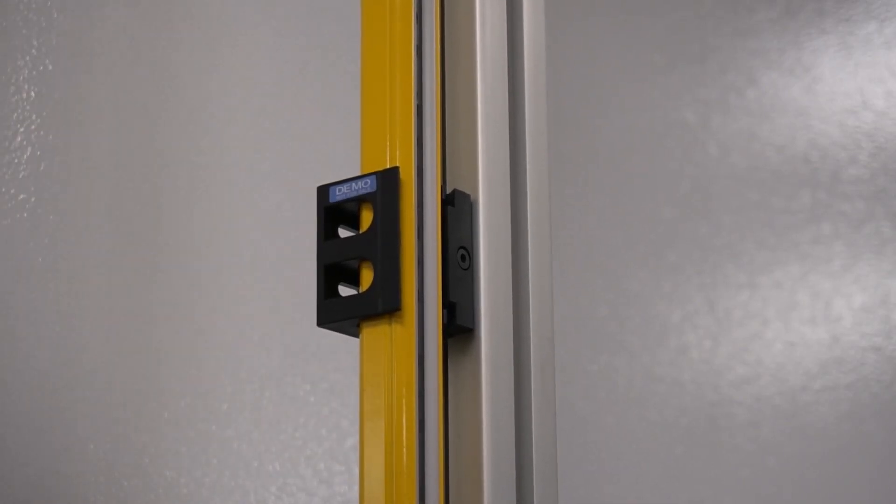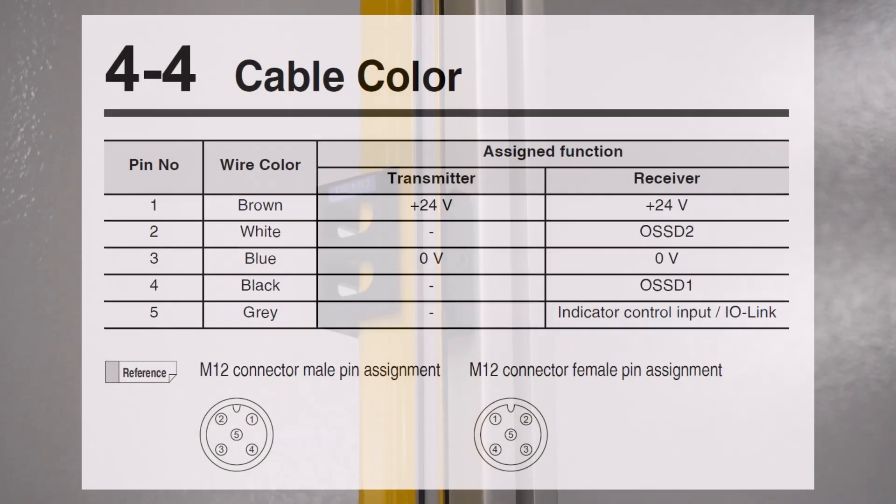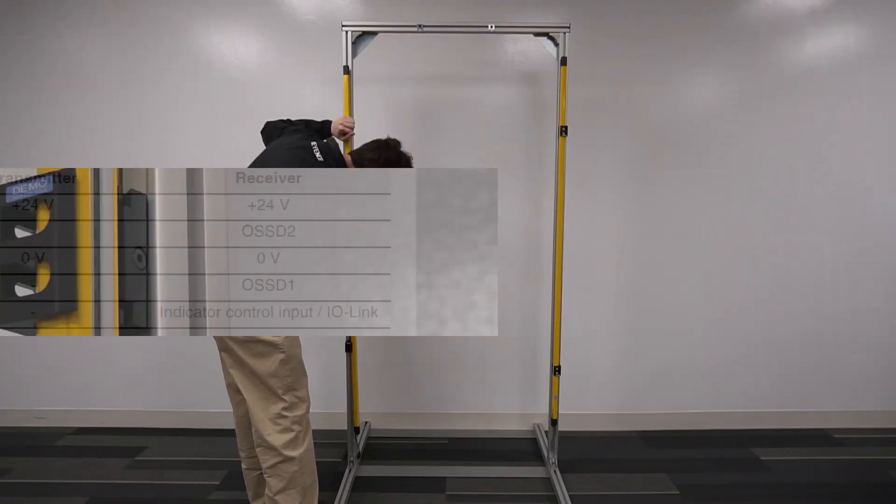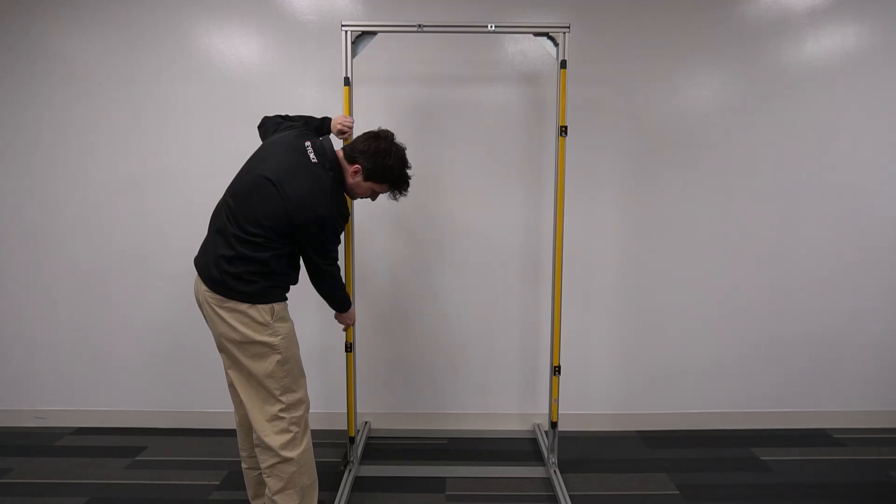Next, supply power via the M12 5-pin connectors according to the pinout that is on the screen now. Once the curtains are powered on, it's time to move on to aligning the transmitter to the receiver.